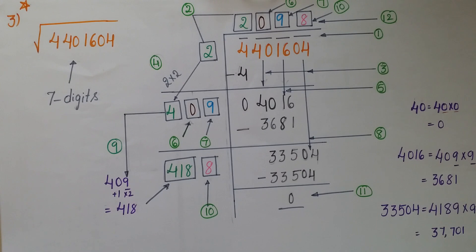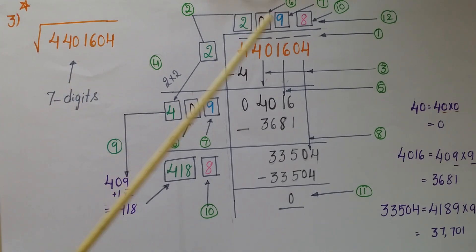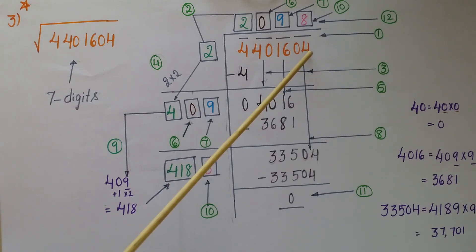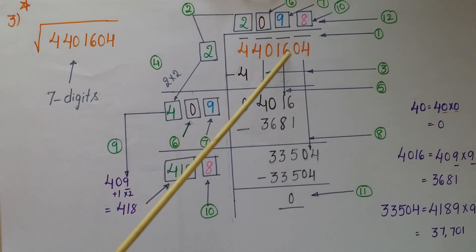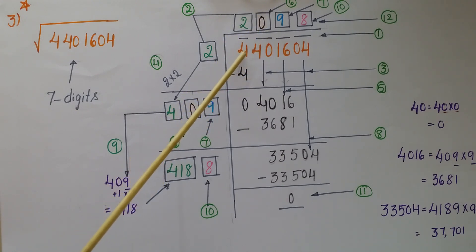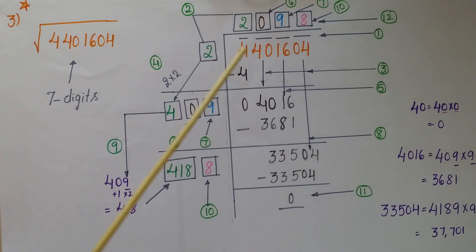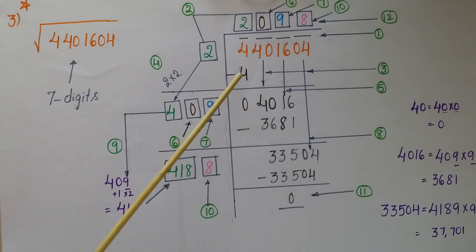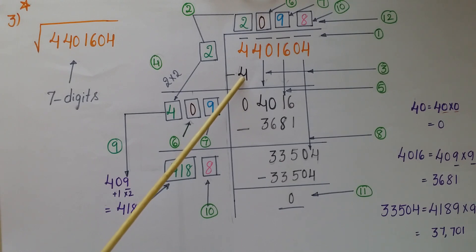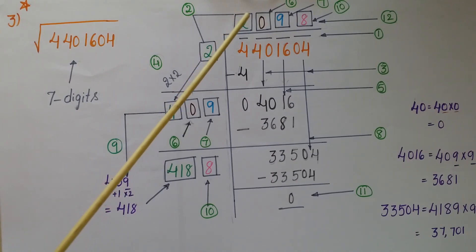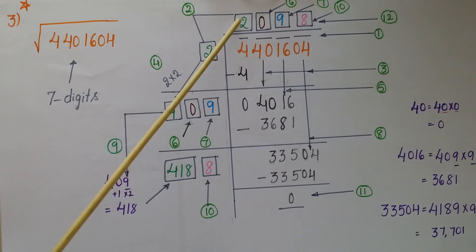Now I am going to show how to find the square root of a seven-digit number: 4401604. Write the number and place bars from the units digit: bar over 04, bar over 16, bar over 40, and a bar over the remaining single digit 4. Starting from the first bar, 4 = 2², so write 2 on the divisor place and 2 on the quotient place.